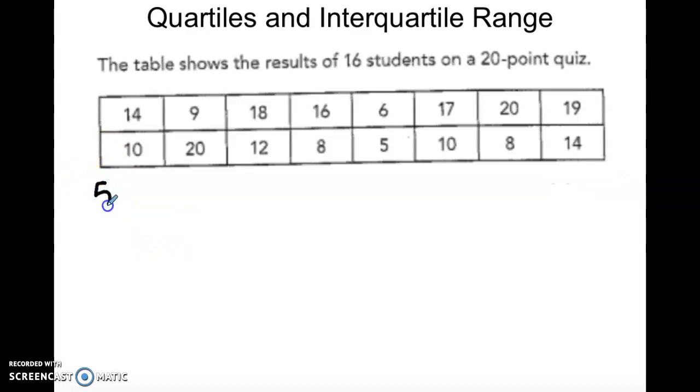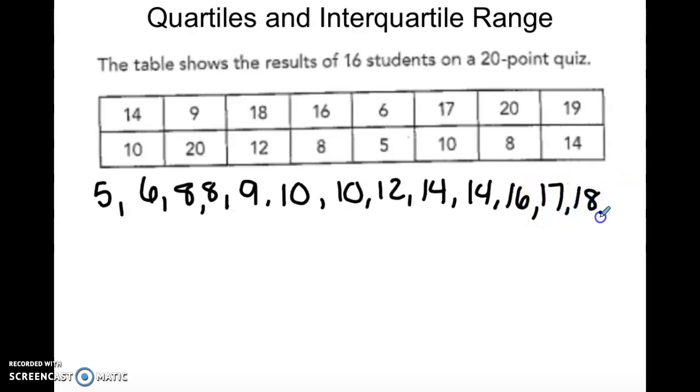The data goes from 5 all the way up to 20. The table shows the result of 16 students on a 20-point quiz. So after I list my data from least to greatest, I'm going to find the median.